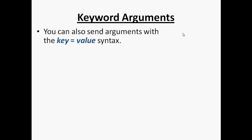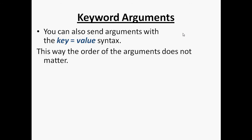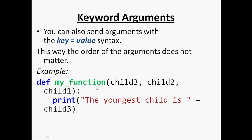Keyword arguments. You can also send arguments with key equals value syntax. This way, the order of arguments does not matter because you already defined the value with the corresponding key. In my function definition, I have taken three parameters: child3, child2, and child1. While printing from this function, I have taken child3 — that is the specific name of the parameter — and it will print the value of child3 taken from the function call.